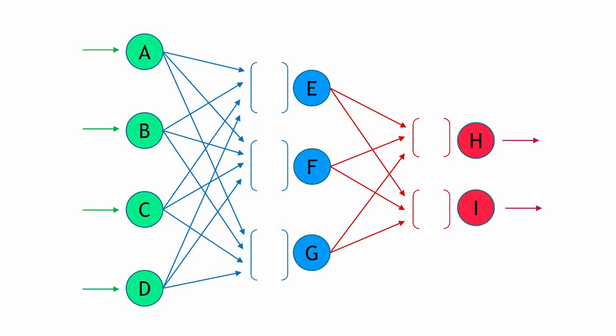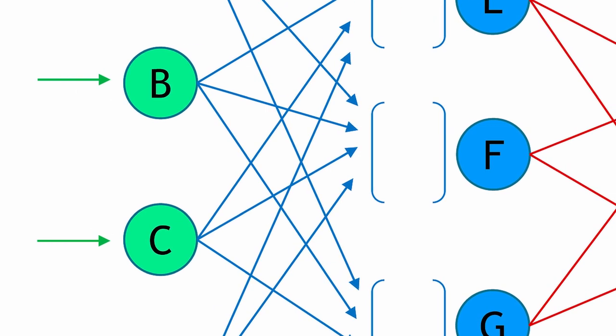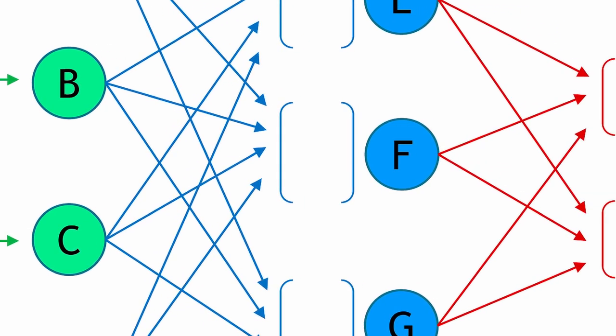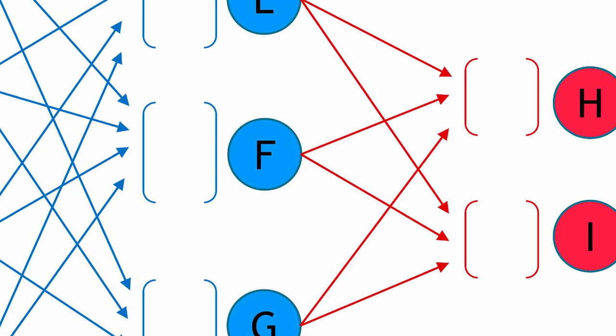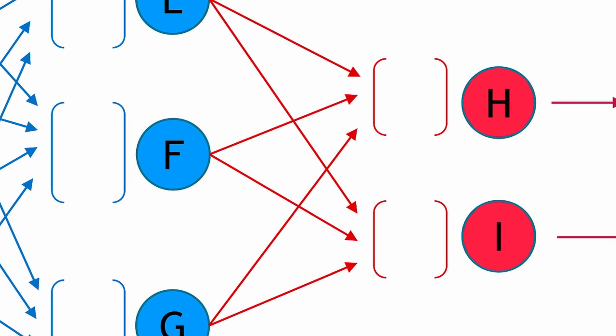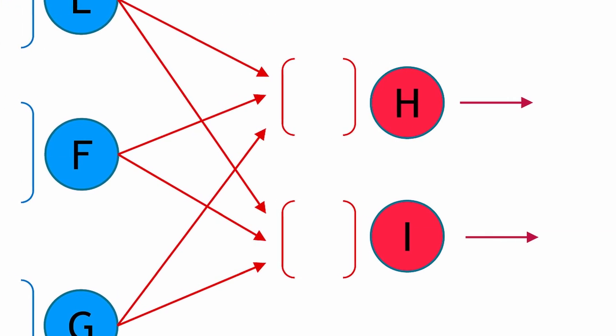Here we have nine units and three layers, only one hidden layer here in blue. So we have here four input units A, B, C and D, three hidden units E, F, G, and two output units. Please note it's a very simple example and in practice you have maybe 10 thousands of input units and maybe 200 hidden layers and maybe a dozen or a hundred output units.